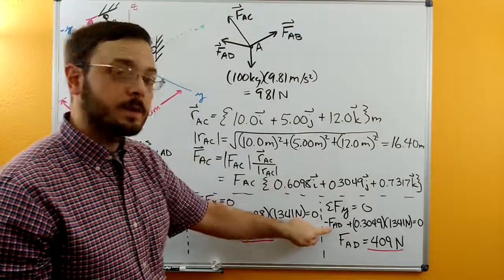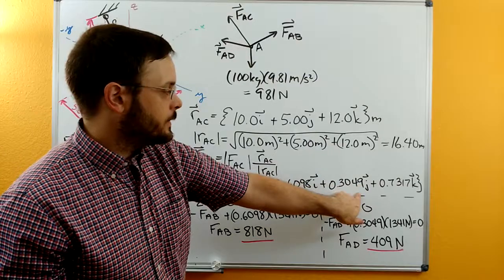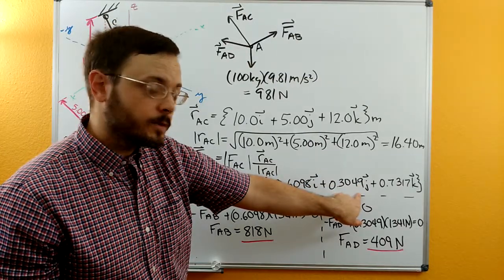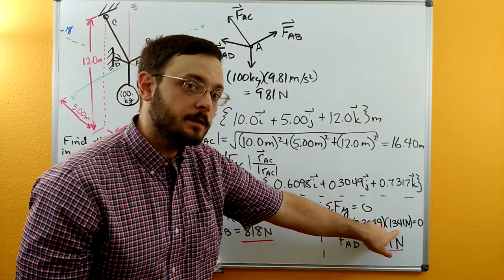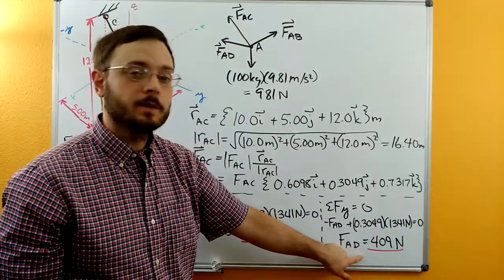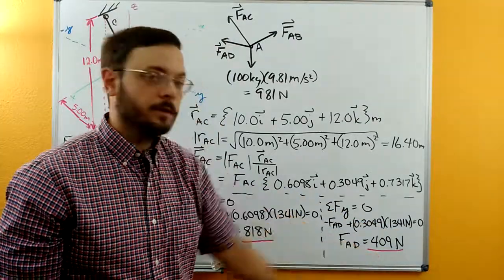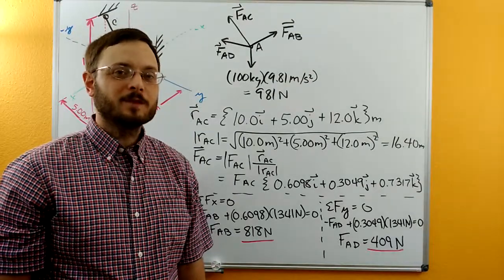So this is going to be negative FAD times the 0.3049 that's out in front of the y here times the magnitude of FAC, the 1341 newtons. Then we can solve for FAD and we get the 409. Thanks for watching.